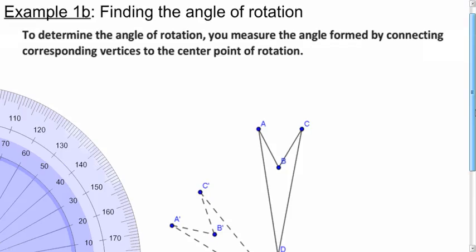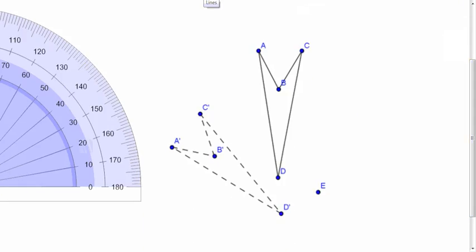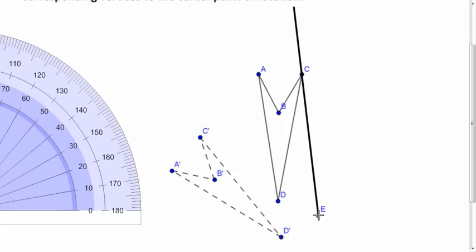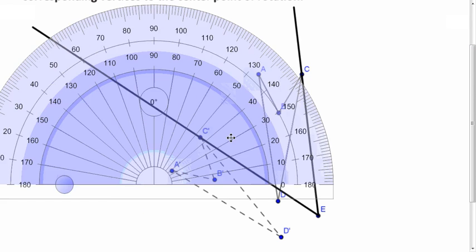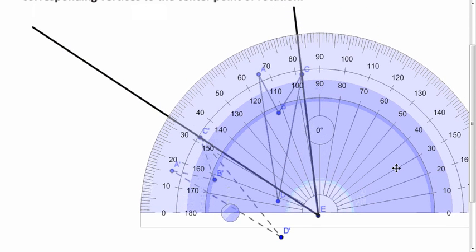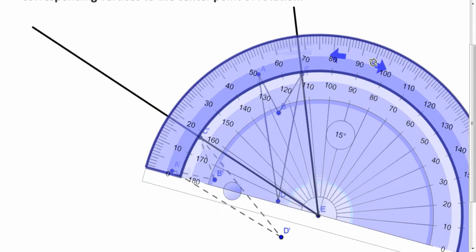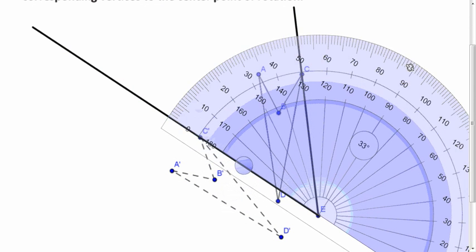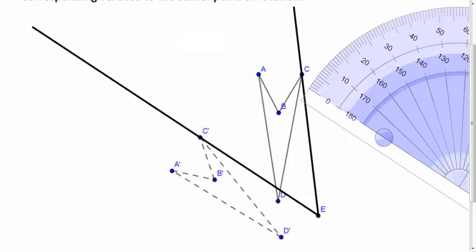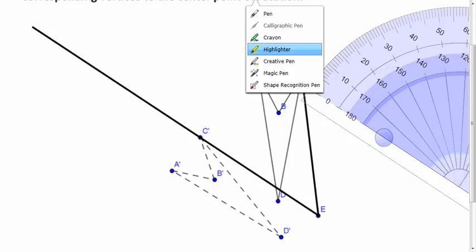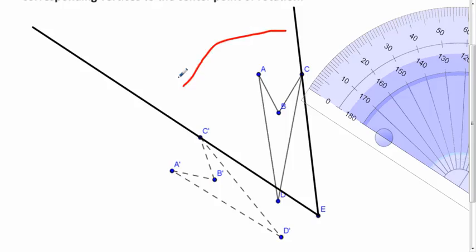Similar example, but now our center of rotation is not a point on the image or the preimage. Same idea. Connect the center to a point in the preimage which you see this time and then connect it to a point in the image, the corresponding point C prime. Put the center of the protractor on the center of rotation and turn it around so the zero lines up and let's see, that looks like it's 50 degrees. Think about which direction you're going, clockwise or counterclockwise. We are going counterclockwise.